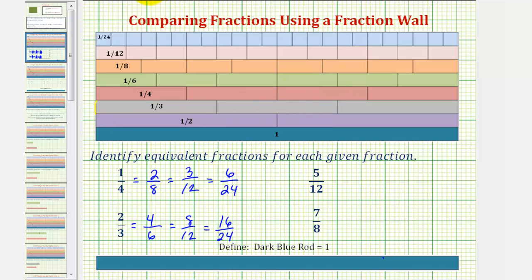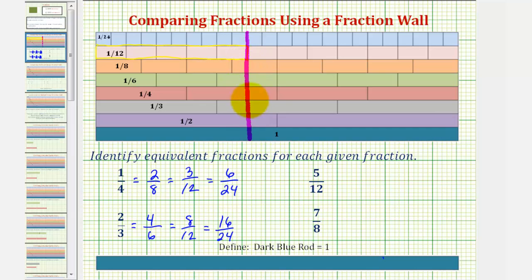Next we have five-twelfths. To model five-twelfths, we'd have to use five rods of length one-twelfth. Any train of rods with this length would give us an equivalent fraction, and notice the only rods we can use this time would be the one-twenty-fourth rods. Counting them, it takes ten one-twenty-fourth rods to equal five-twelfths, so ten-twenty-fourths is equivalent to five-twelfths.